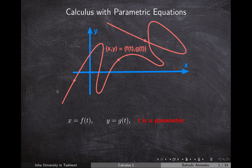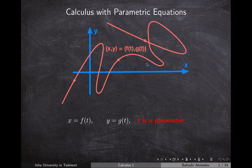A parametric equation of a curve is when we represent the x and y coordinates of all the points along a curve using two separate functions which depend on a third variable T, called the parameter. By defining different values for T, we can define points along the curve. We need parametric equations to represent these kinds of curves because we cannot use ordinary equations, since they fail the vertical line test.